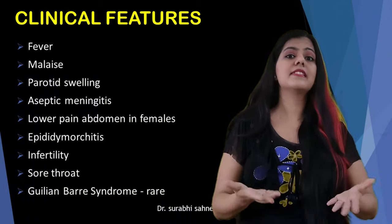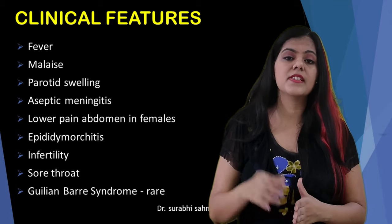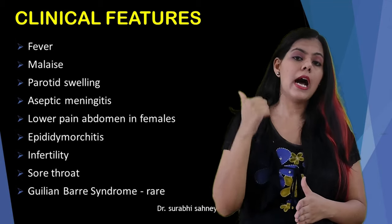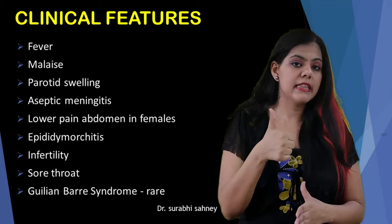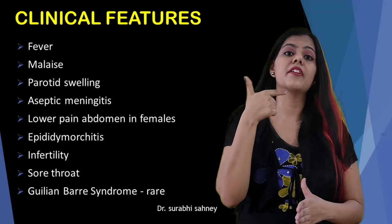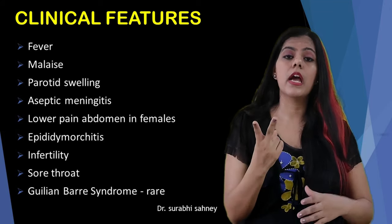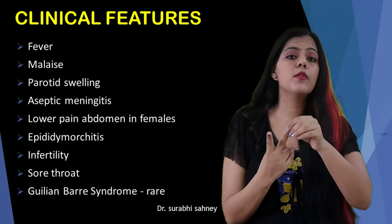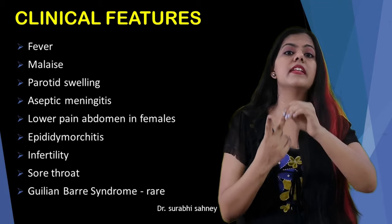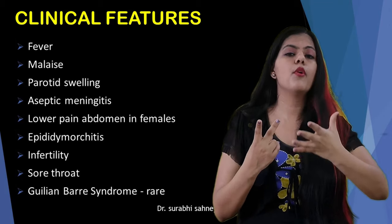Regarding peripheral nervous system involvement: the clinical features of this syndrome include facial nerve palsy, respiratory paralysis, and facial nerve palsy — presenting as an acute autonomic or simple neuropathy.